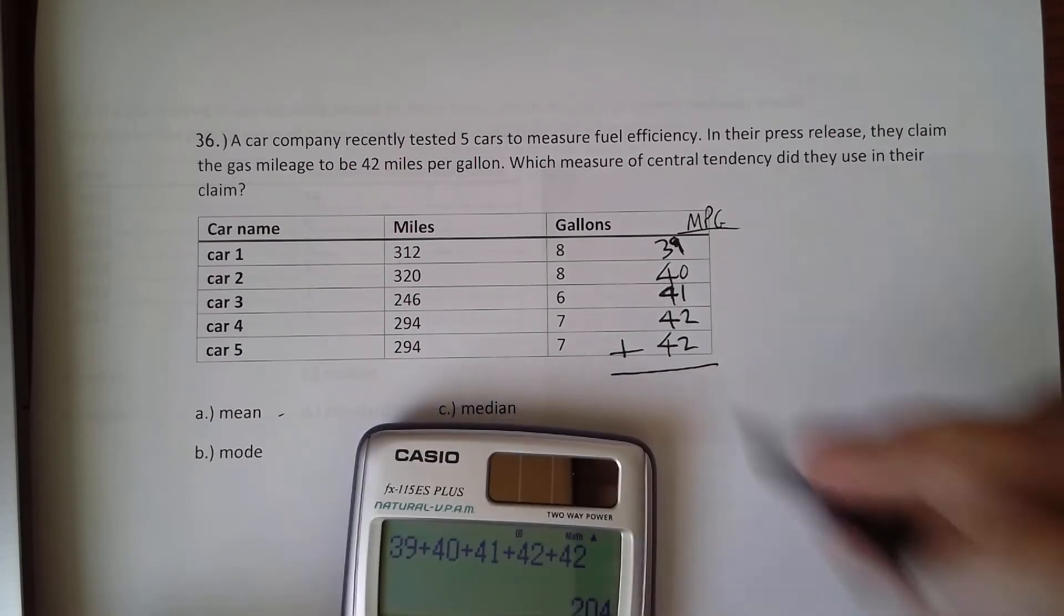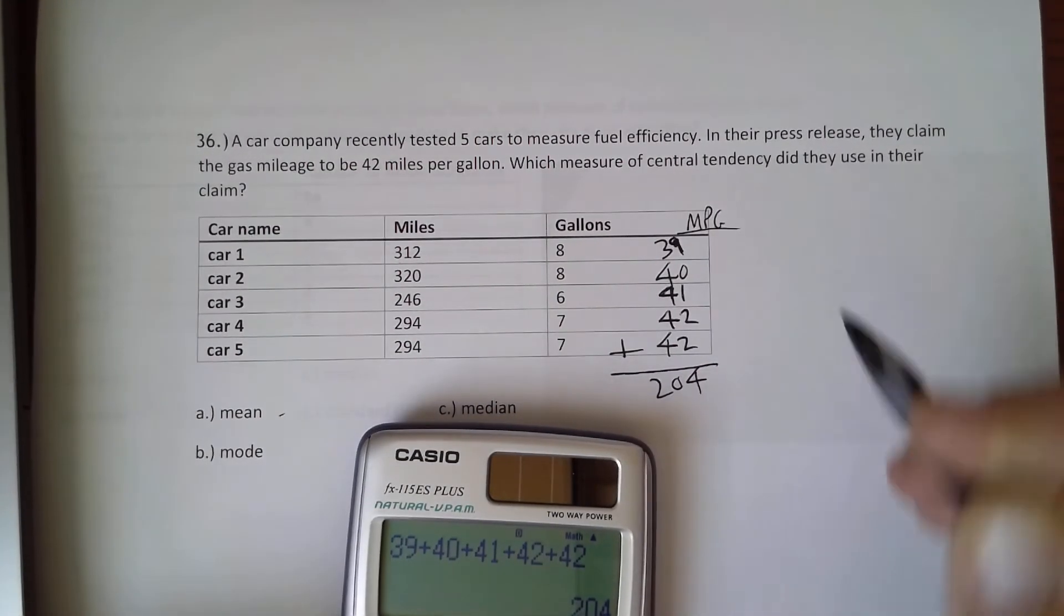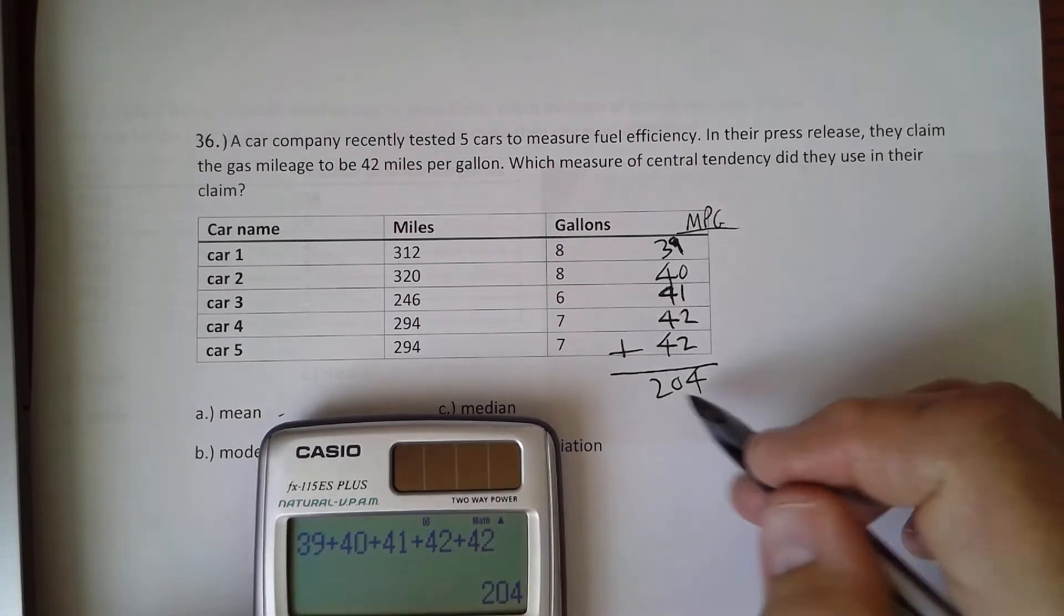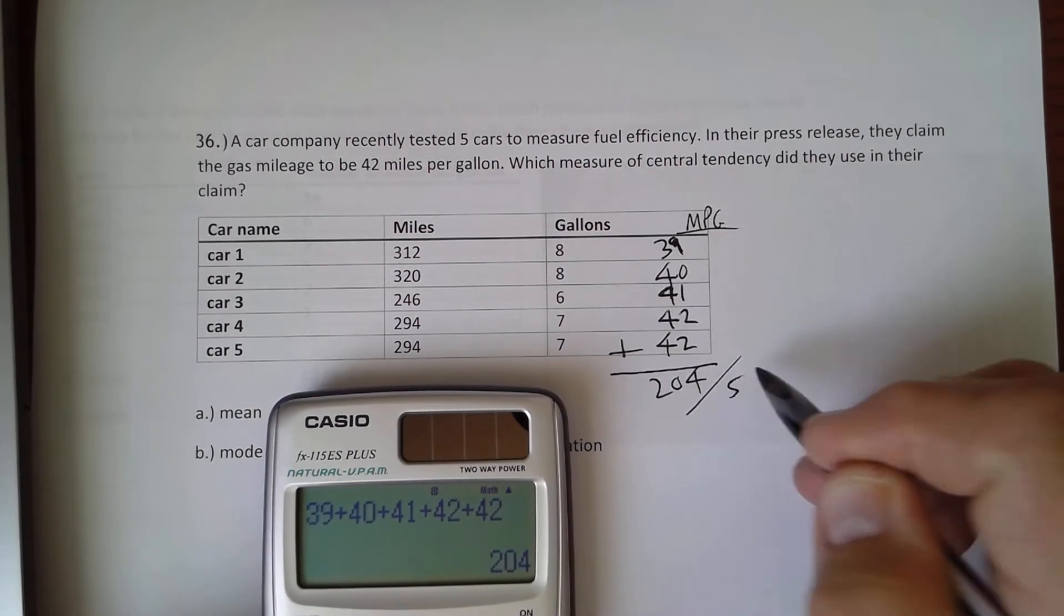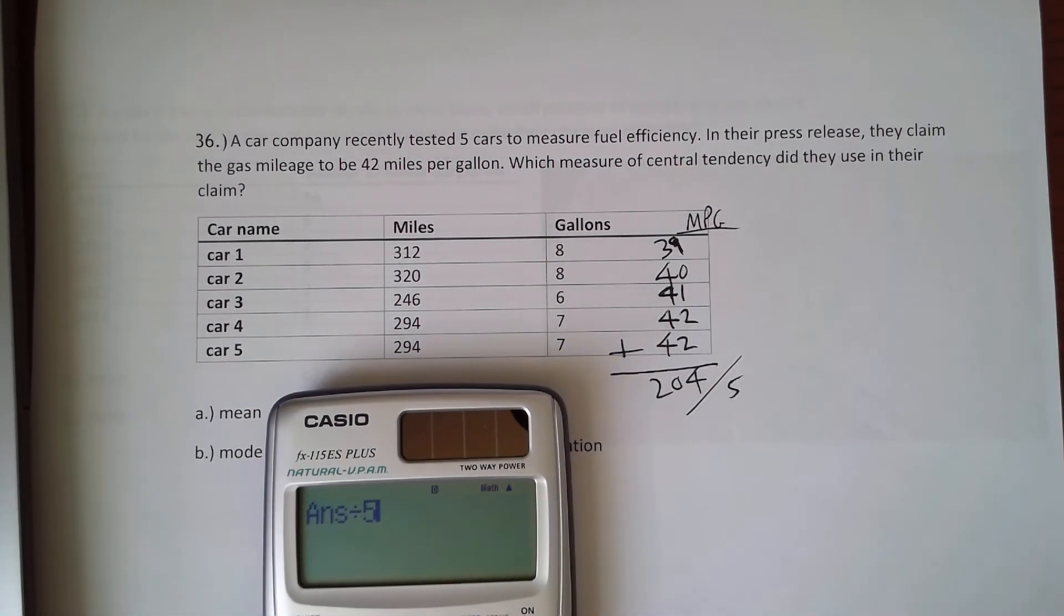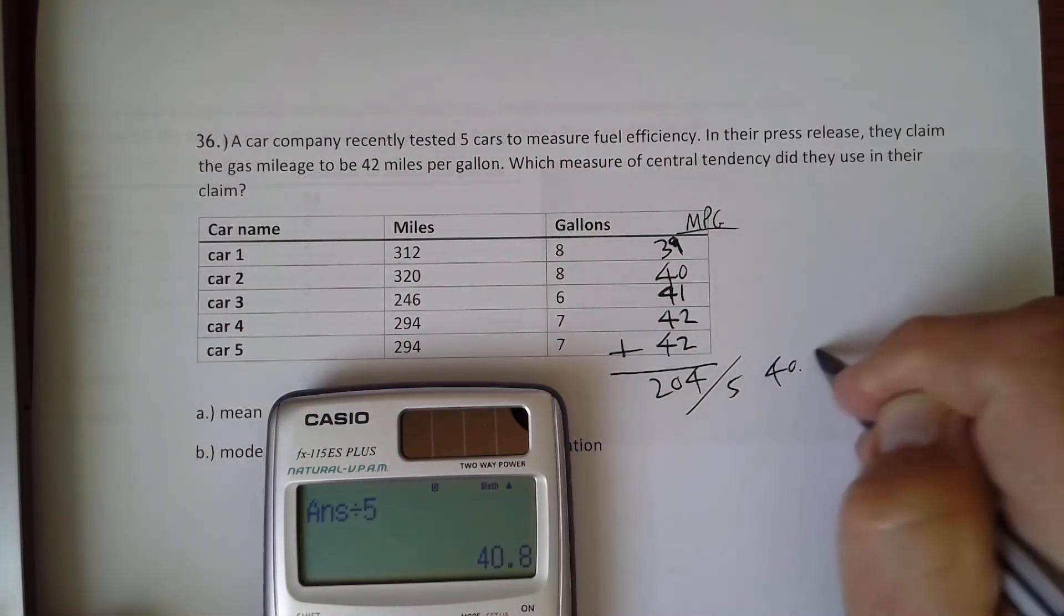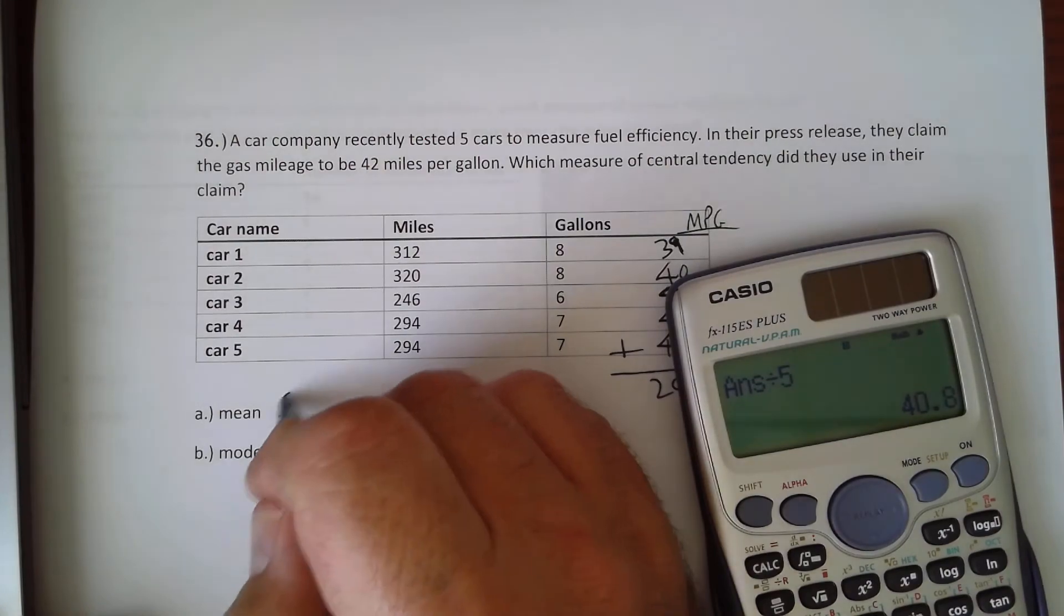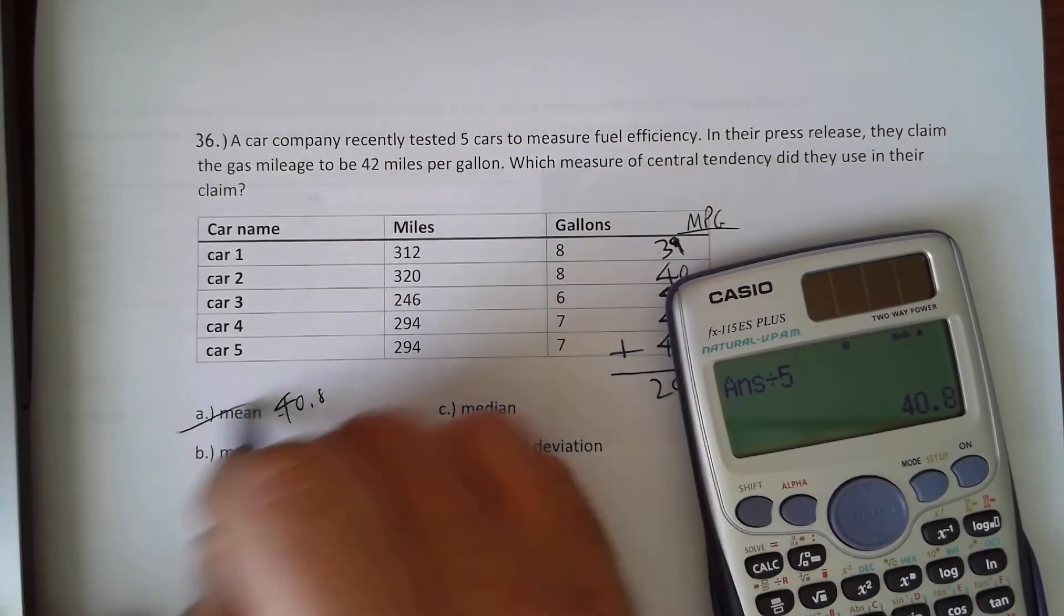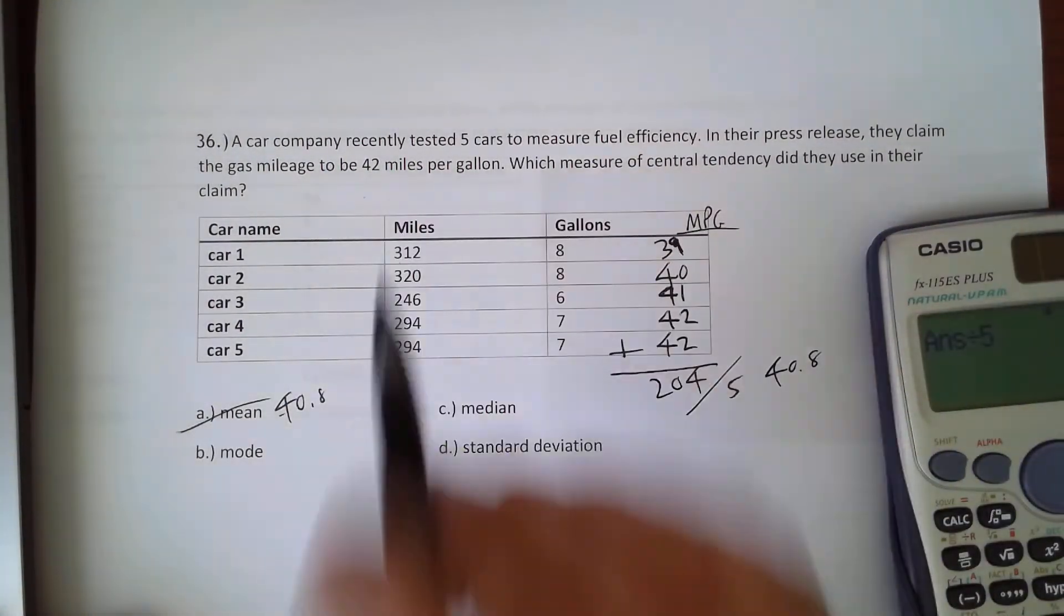And that gives me 204. And to find the average, we take the total and we divide by the number. So divide by 5, and that gives us 40.8. So 40.8 is the mean, which is not going to be 42 miles per gallon.